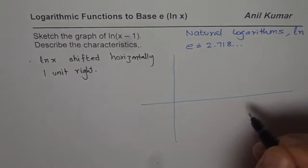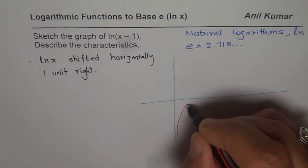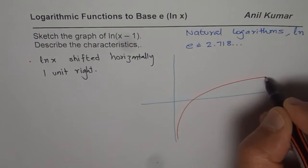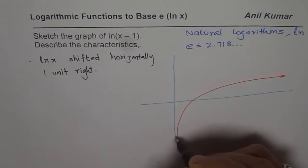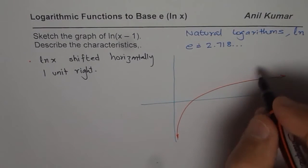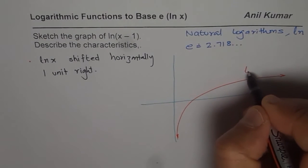We will first sketch ln(x) and then translate it one unit to the right. In general, the graph will be kind of like this. That is how the graph is and this graph is for ln(x).